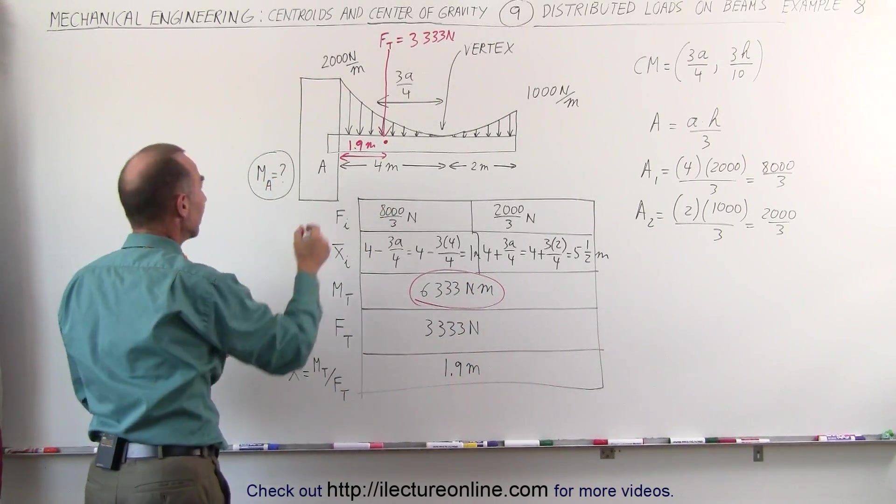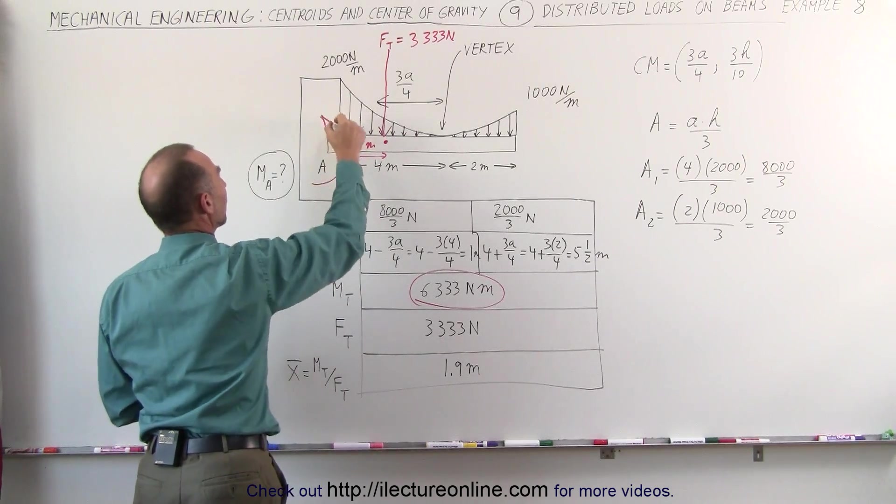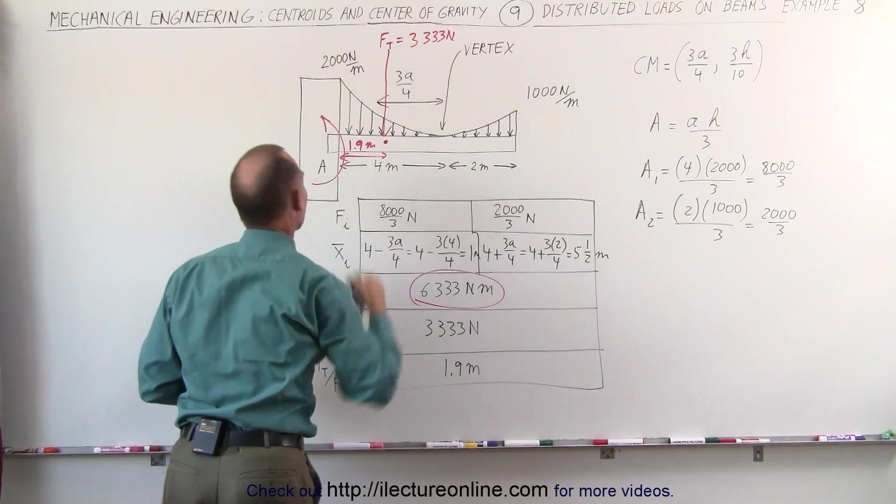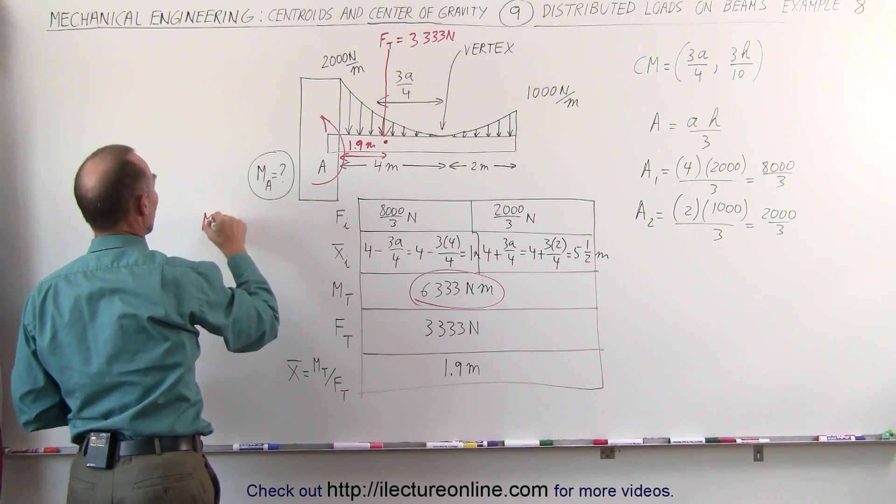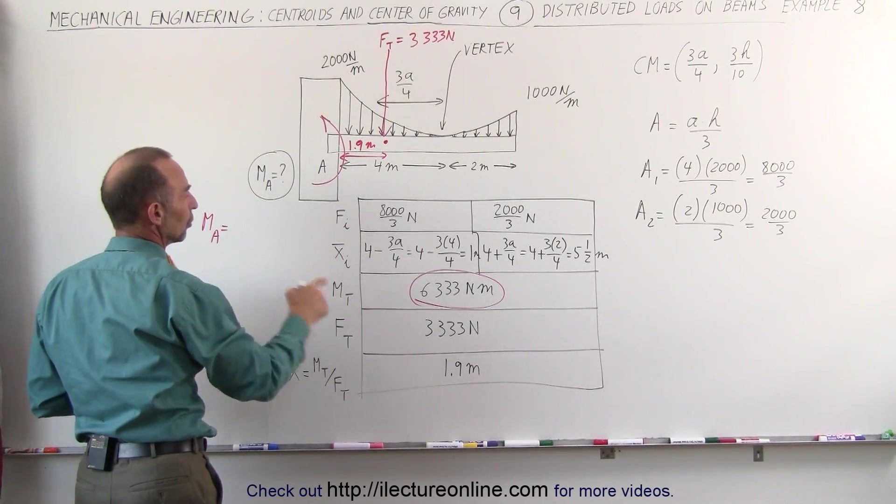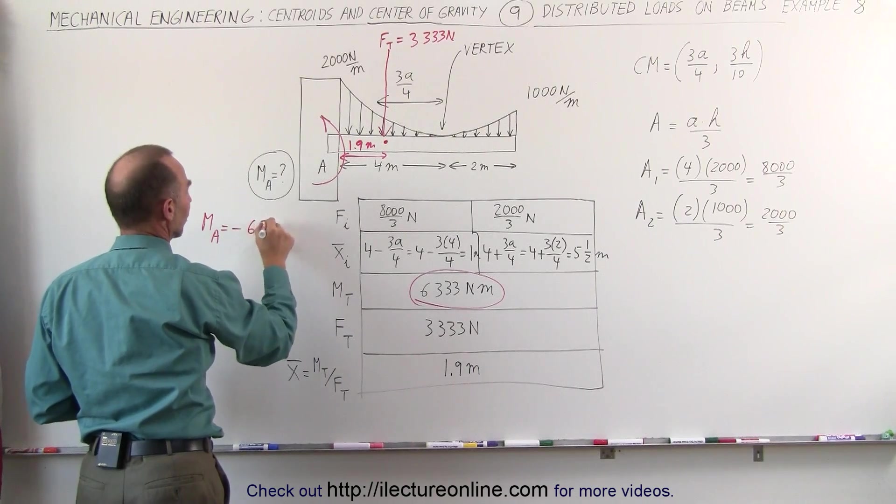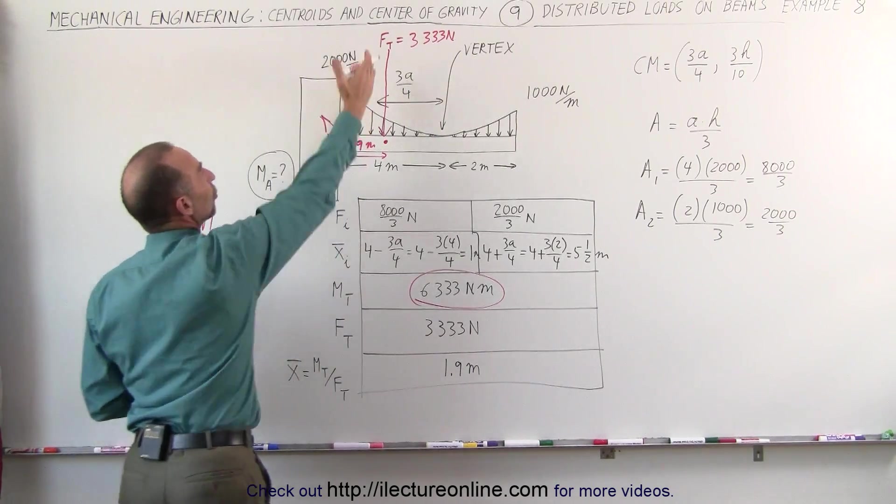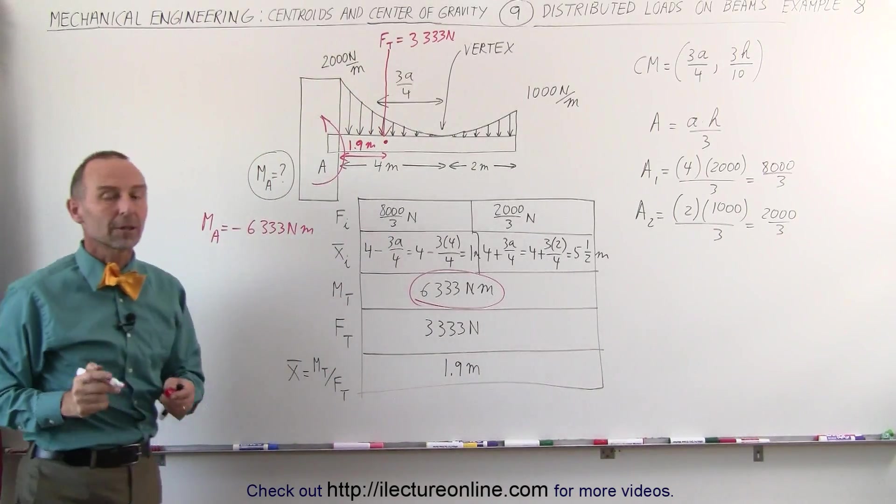And then the total moment is equal to 6,333 Newton meters, which means the moment at A in this direction, to compensate for the moment caused in this direction by the total force acting on the beam, and so moment at A is therefore equal to a negative 6,333 Newton meters, relative to the moment caused by the load on the beam.